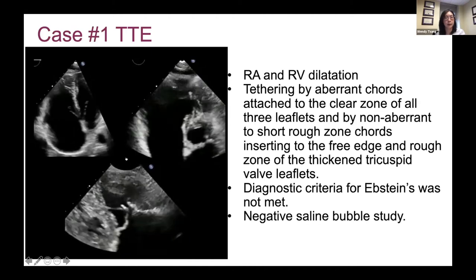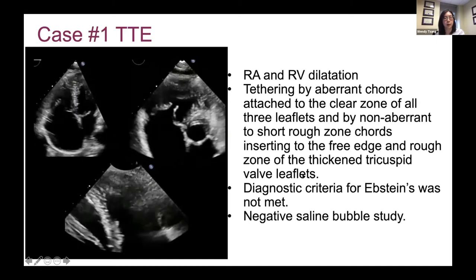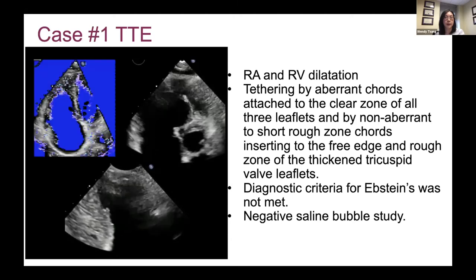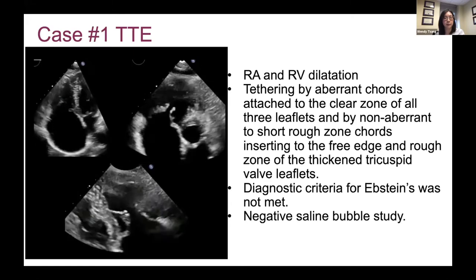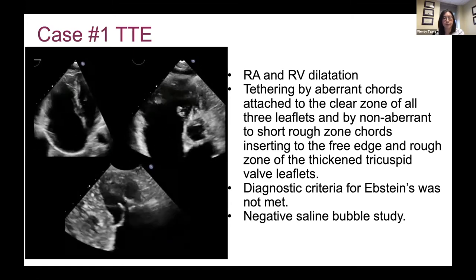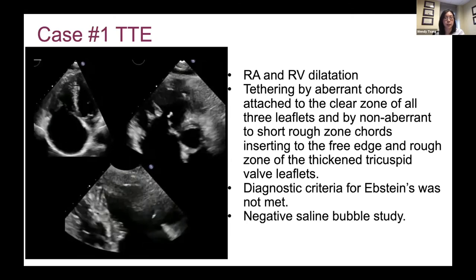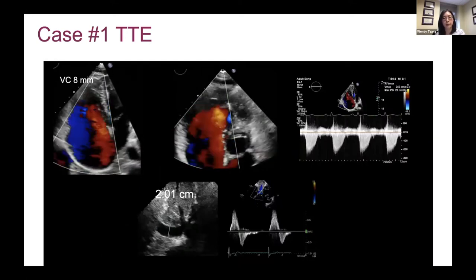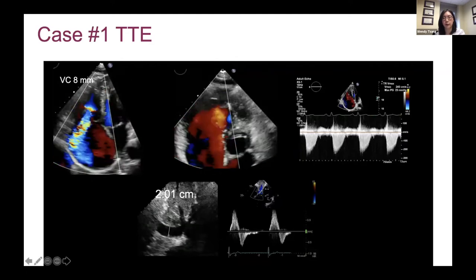Tethering is seen not only at the edges in the clear zones, but also in the rough zones. There weren't criteria met for Ebstein's anomaly on the apical four-chamber view. So this wasn't an Ebsteinoid or Ebstein valve, but it ended up being called a dysplastic valve — there's something congenitally abnormal about this valve. Because we see RV and RA enlargement, we wanted to make sure there was no shunt. He had a negative bubble study.